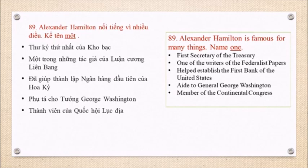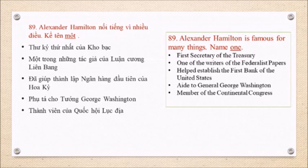Question 89: Alexander Hamilton is famous for many things. Name one. First Secretary of the Treasury. One of the writers of the Federalist Papers. Helped establish the First Bank of the United States. Aid to General George Washington. Member of the Continental Congress.